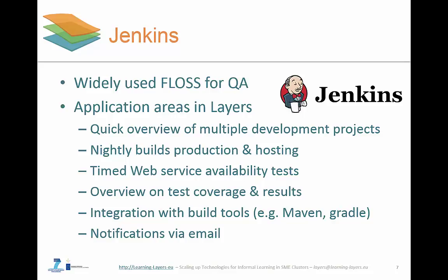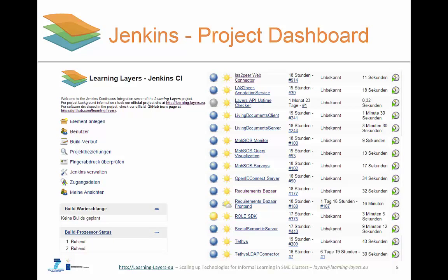Jenkins offers automatic build and testing functionalities based on open GitHub hosted code, an interface for comprised projects and various integration levels. It can build projects on demand or based on a predefined schedule such as building every night, and can generate reports particularly upon failures and communicate them via email to subscribed users. Certain actions can be triggered automatically based on the success or failure of builds or tests. The Jenkins dashboard, also accessible from the Layers open developer library, outputs all integrated open source Layers projects that are built from an existing GitHub repository. This list shows a subset of the current projects that are built using Jenkins.